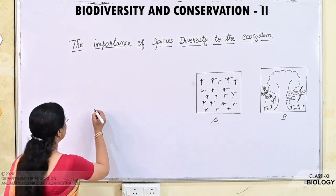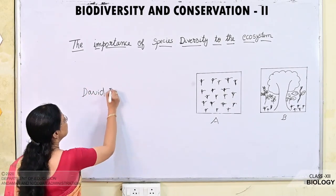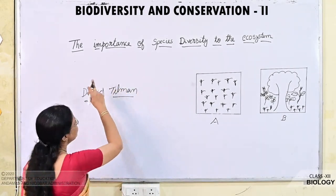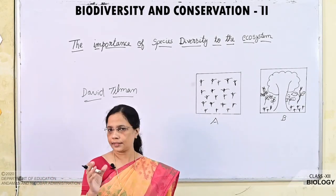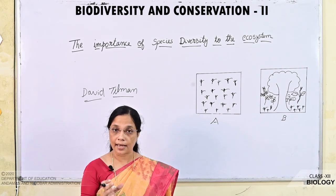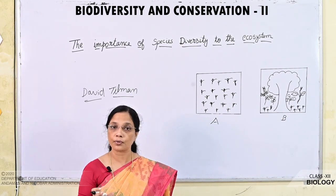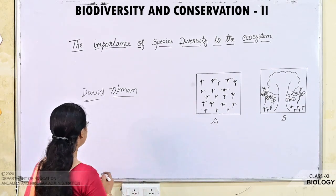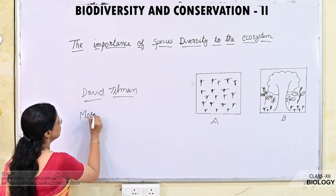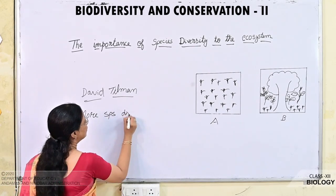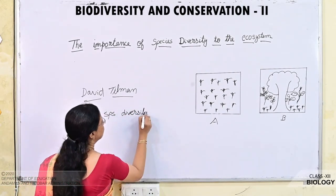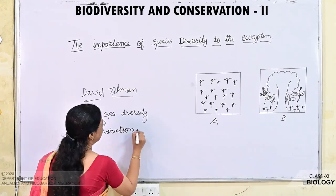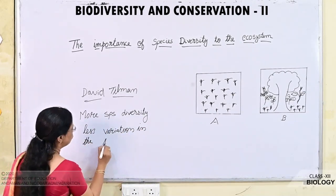An ecologist, David Tilman, studied the importance of species diversity in the ecosystem and concluded that in a land where species diversity is more, there will be less year-to-year variation in the total biomass. That means: more species diversity, less variation in the total biomass.